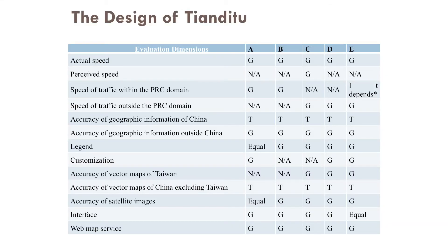We also conducted expert surveys among GIS experts regarding the functions of TMD2 and Google, where G means Google fares much better and T means TMD2 fares much better. For instance, regarding the accuracy of geographic information within China, TMD2 fares much better — of course, because it is created by the Chinese government. But outside China, as seen from the earlier example when I tried to locate USC and couldn't find it, Google fares much better.